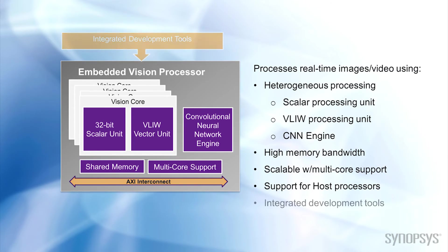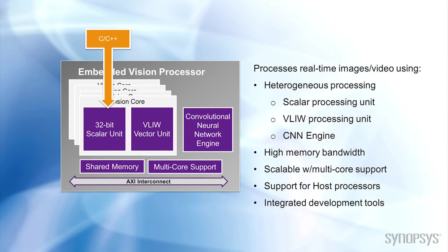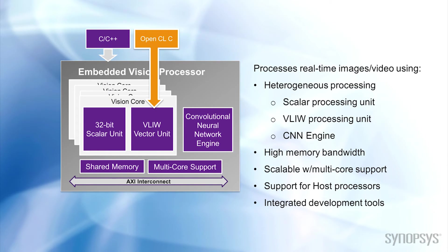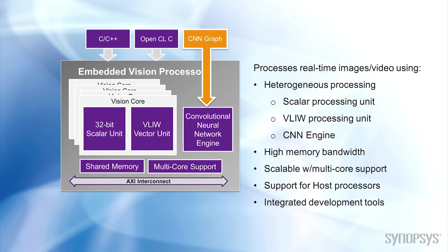All of this requires specialized software that integrates the features into a single standard programming model. Programming in C works for the scalar processing unit, but to take advantage of the parallelism of the vector processing unit, an OpenCL C compiler is recommended. In addition, designers need a tool to map the neural network coefficients and topology into the CNN hardware.